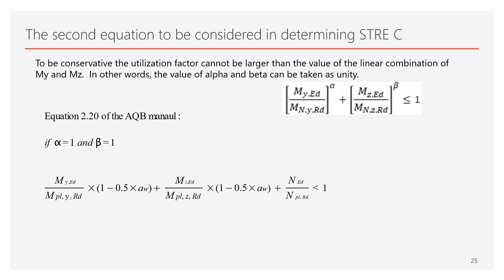In this way, we can reach that the N, the load ratio, will be on the left-hand side of the equation. Of course, the same rearrangement for MZED over MNZRD can be undertaken, as it can be seen in the current slide. Finally, the derived term that contains N, the load ratio, can be substituted back to the equation 6.41 and resulted in the extended equation of 2.15, as it is also presented in the AQB manual.